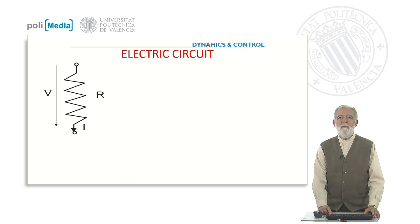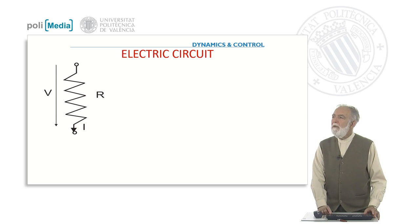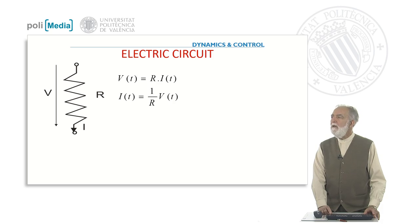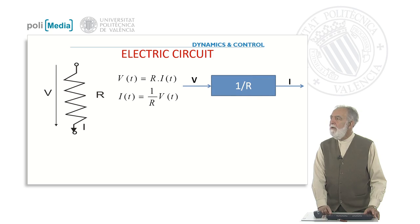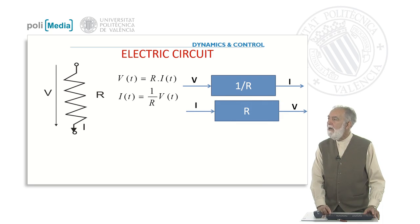So let's go to the first question. You have here an electric circuit: V is the voltage, I is the current, R is the resistance, and we know that by Ohm's law there is this relationship. If we represent this as a system, we can say that in this case V is the input and I is the output.